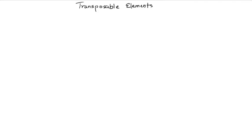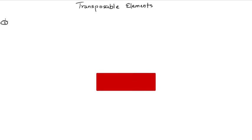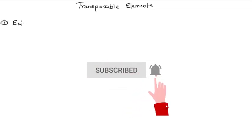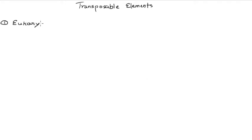Welcome back to another video. In this one we're going to talk about transposable elements. First we'll talk about transposable elements in general — the general features — and then we're going to move into transposable elements found in prokaryotes or in bacteria. Starting off, the first point about transposable elements is that they are found in both eukaryotes and prokaryotes.